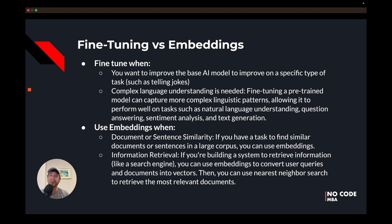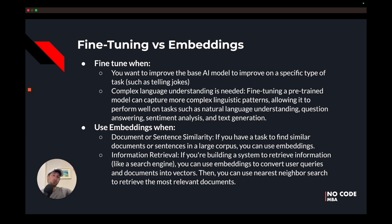Fine-tuning versus embeddings: at No Code MBA we also have a fine-tuning course. Fine-tuning allows you to improve the AI base model to perform better on a specific type of task. The base model is GPT-3 or GPT-4, for example, provided by OpenAI. If you want to make one of those models better at a specific task — for example, better at telling jokes — you can fine-tune the model by training it on 200 examples of jokes. That's one example of when you might want to fine-tune a model.